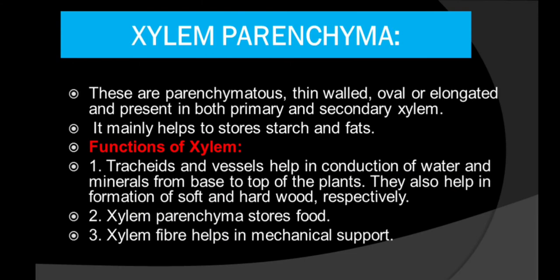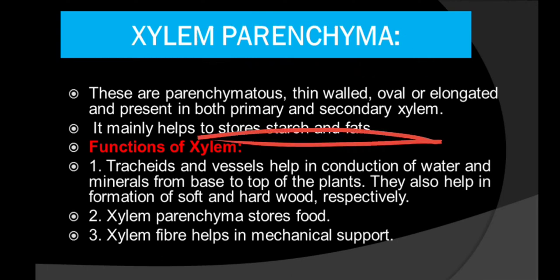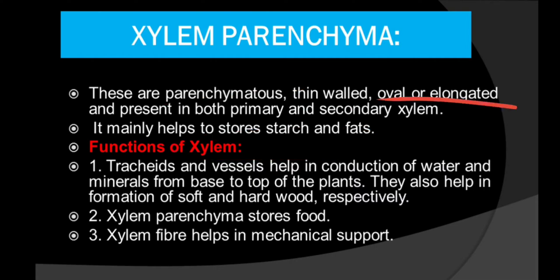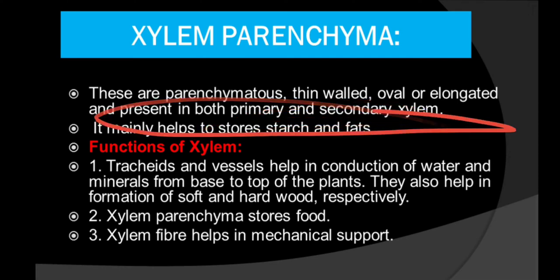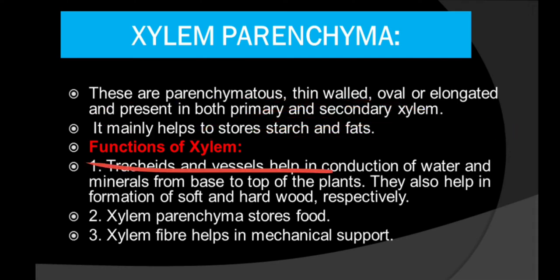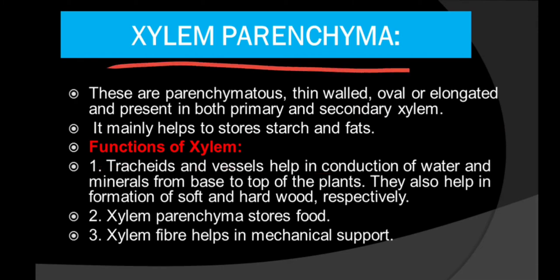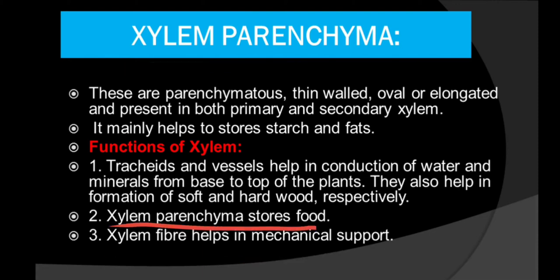Xylem parenchyma is the only living cell in xylem and its main function is to store starch and fats. They are thin-walled, oval or elongated parenchyma cells, present in both primary and secondary xylem. To summarize xylem functions: xylem parenchyma stores food, xylem fibers give mechanical support, and tracheids and vessels conduct water and minerals and help in the formation of wood.